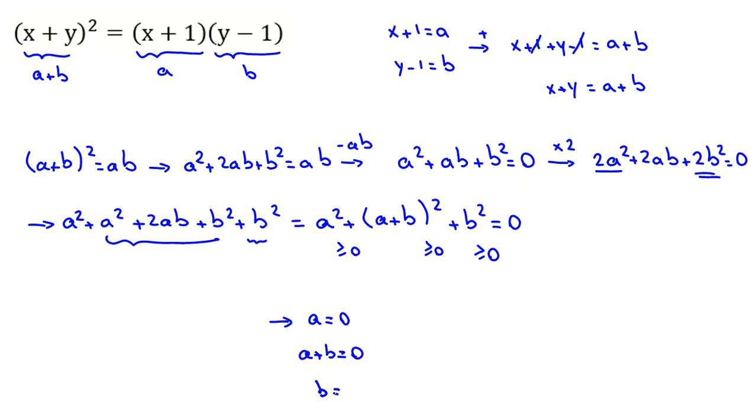So if a and b are zero, a plus b will be zero. a is what? From changing variables, a is x plus 1. Here, x plus 1 equals zero. b is this part, y minus 1 equals zero.